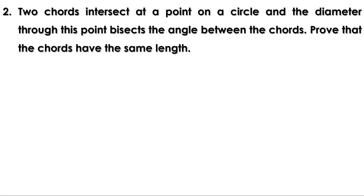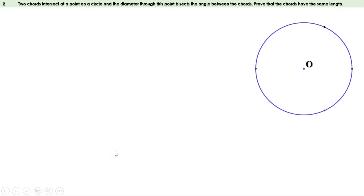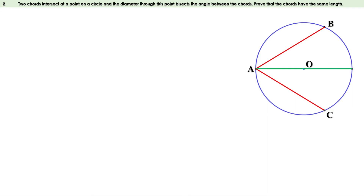Second problem: Two chords intersect at a point on a circle and the diameter through this point bisects the angle between the chords. Prove that the chords have the same length. Let us draw a circle with center O. Let two chords intersect at a point A, and let the chords be AB and AC. Now let us draw the diameter through this point. Given that the diameter bisects this angle, these two angles are equal. Now let us draw the perpendicular from the center to the chords. Let them meet the chords at P and Q respectively.